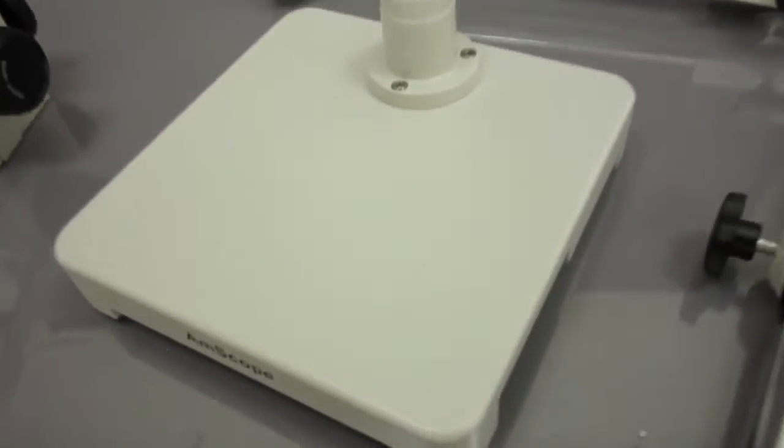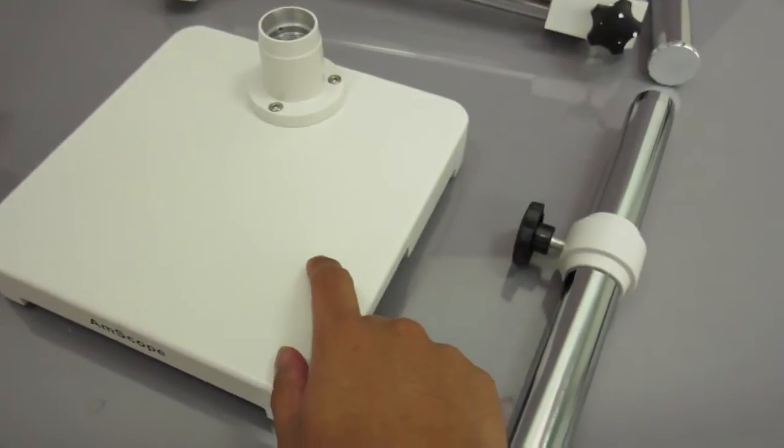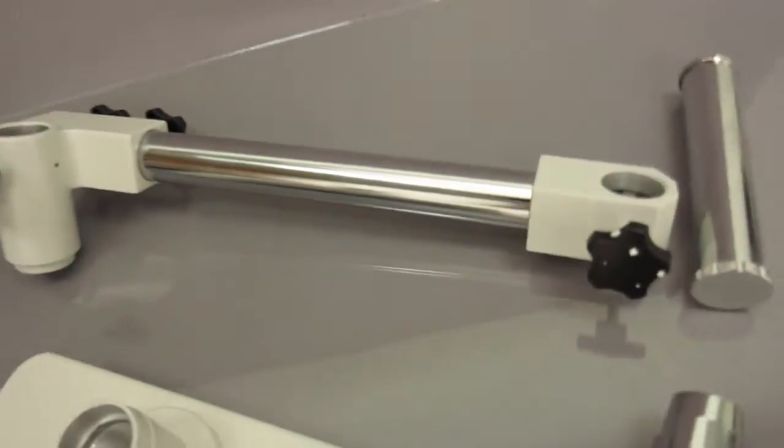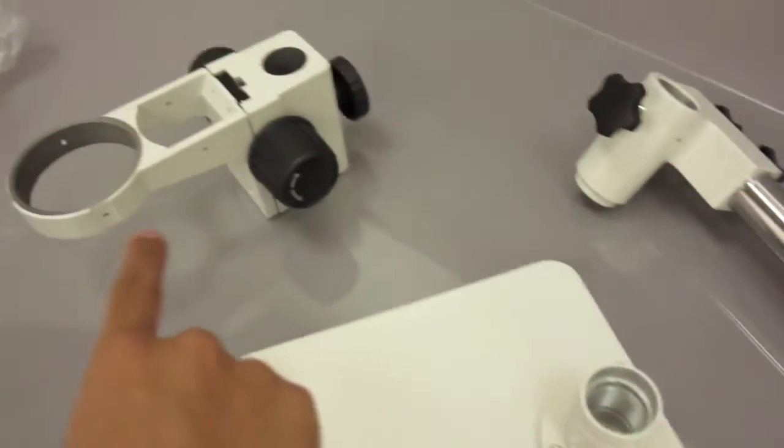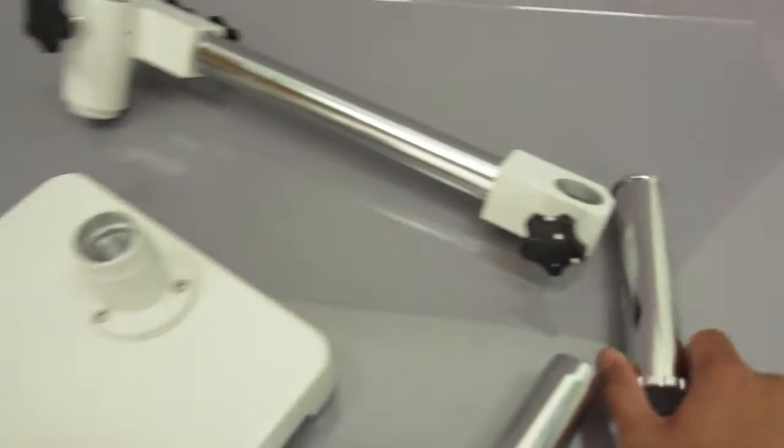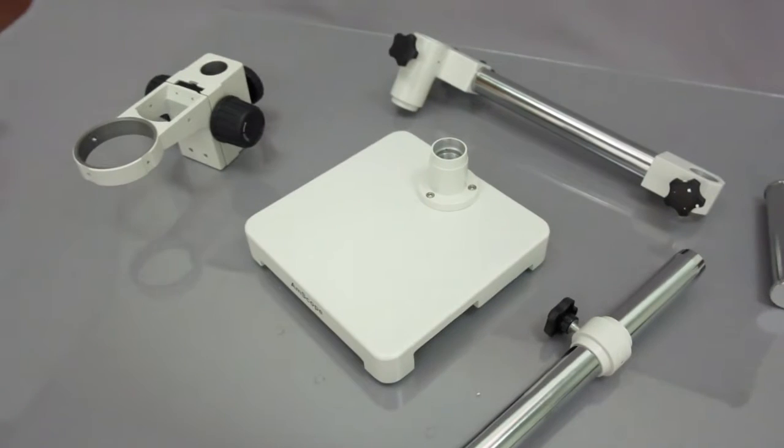And then you have the stand. This is the pole that goes into the stand right there. And this is going to be the arm that holds the focusing rack. And this would be placed into here. So let's go ahead and get this thing assembled.